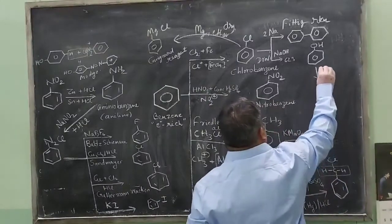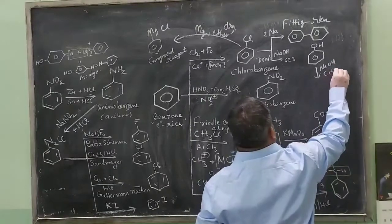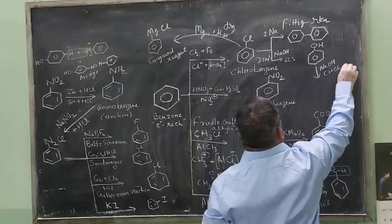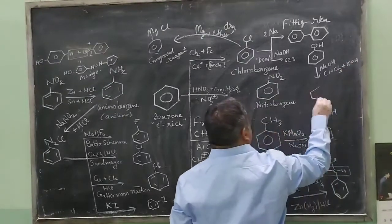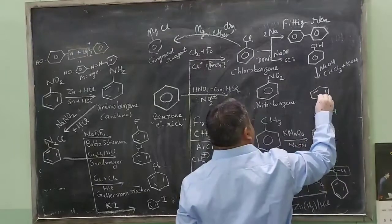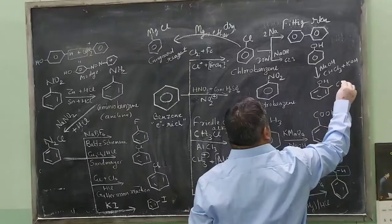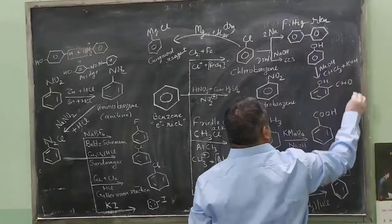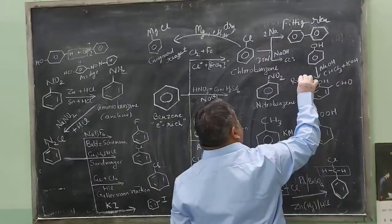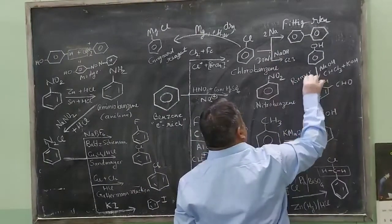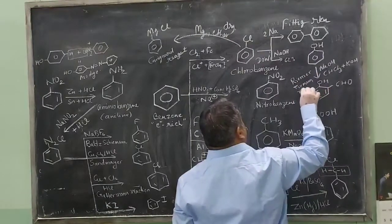Treat this with sodium hydroxide and chloroform, CHCl3 plus KOH. It forms salicylaldehyde. It is called Reimer-Tiemann reaction.